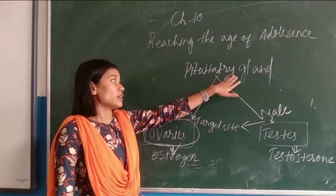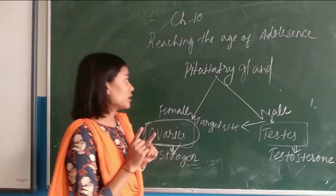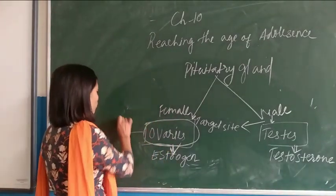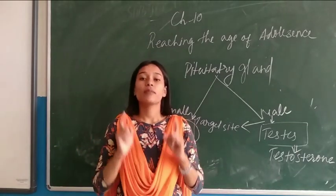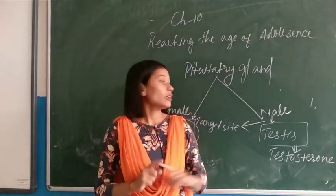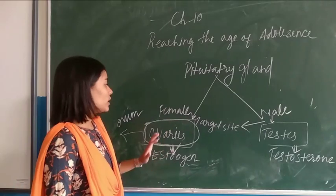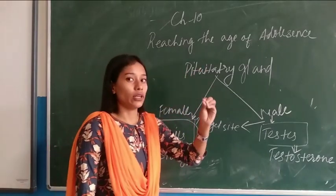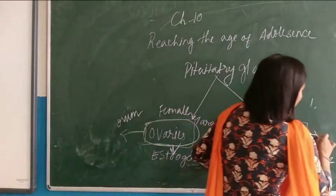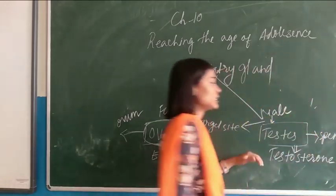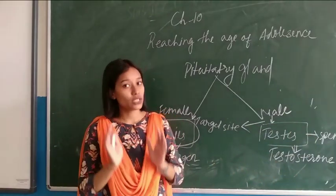The pituitary gland, which is situated in our brain, releases many hormones. One of them is the hormone which matures the ovum in the ovaries. A person is capable of reproducing only when the sperm is mature and the ovum is mature. So the pituitary gland releases hormones that initiate the maturation of sperm in males and ovum in females.